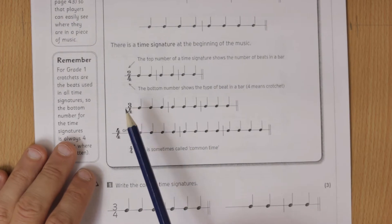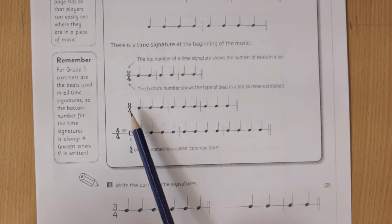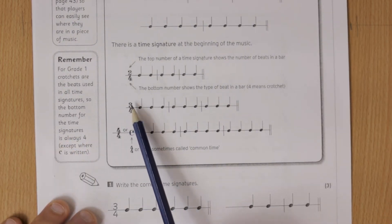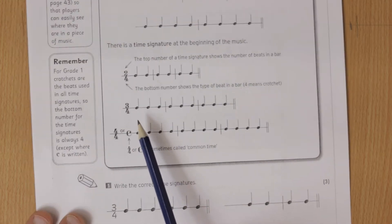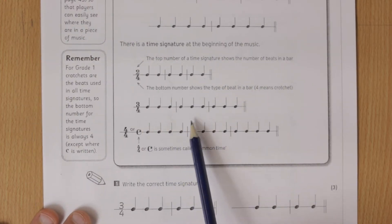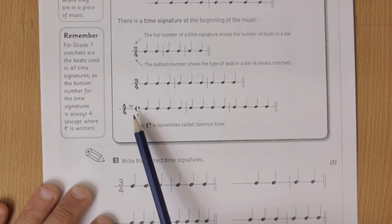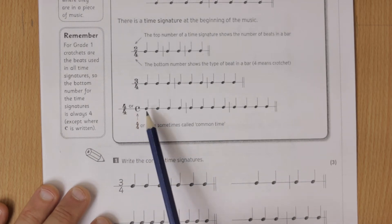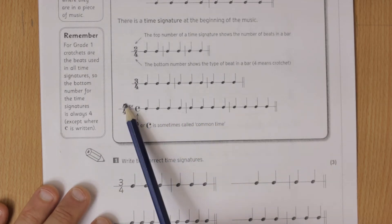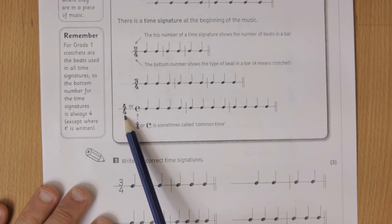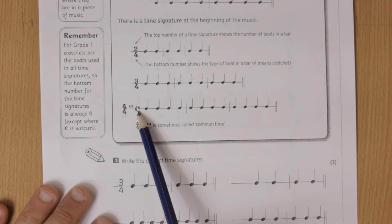Next we've got three-four, and this is meaning three crotchet beats in each bar. Four-four means four crotchet beats in a bar - four and the bottom number is four, crotchet beats. Another way of writing this is a C, which means common time.